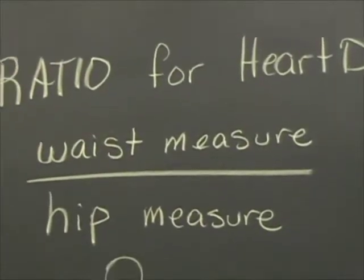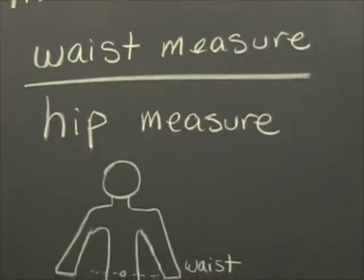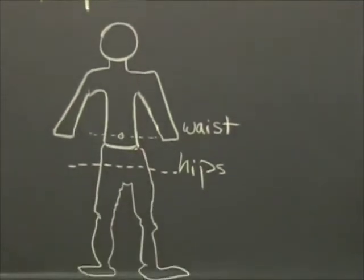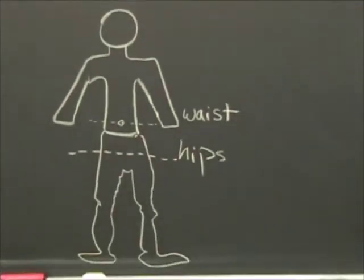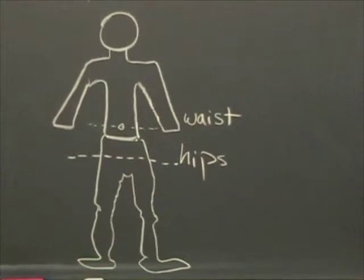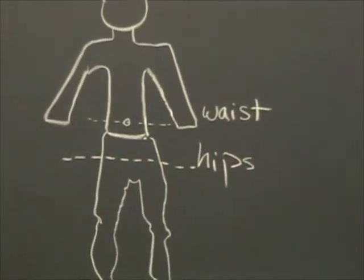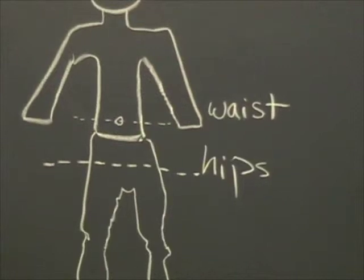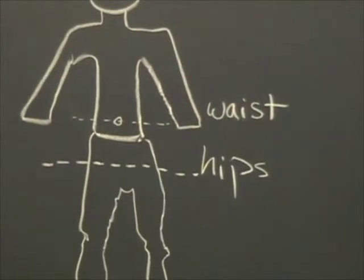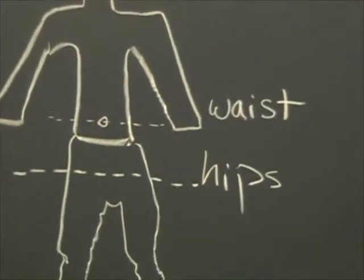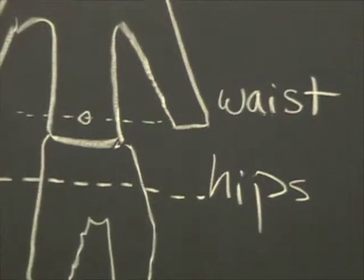It doesn't matter if you are measuring with centimeters or with inches — it just matters that you get the waist right, which is right around your belly button, and the hips. The measurement must go around the fatty part of your bottom, the whole way around. Then you'll create a little fraction with these two measurements.